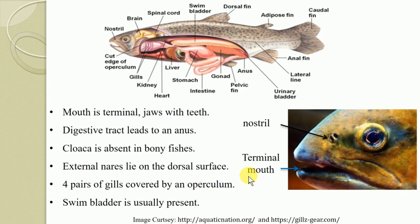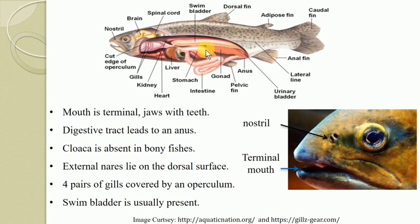The mouth is terminal — located at the proximal tip as visible in the diagram — and the jaws are usually provided with teeth. The digestive system is complete and the digestive tract ends into the anus instead of a cloaca. In Chondrichthyes the cloaca is a common opening for the digestive and urinogenital systems, but in Osteichthyes the digestive system ends in the anus, meaning the cloaca is absent.